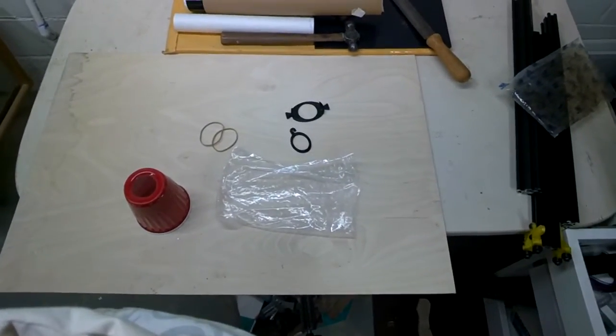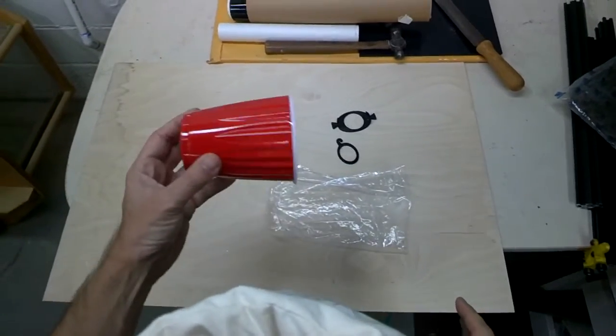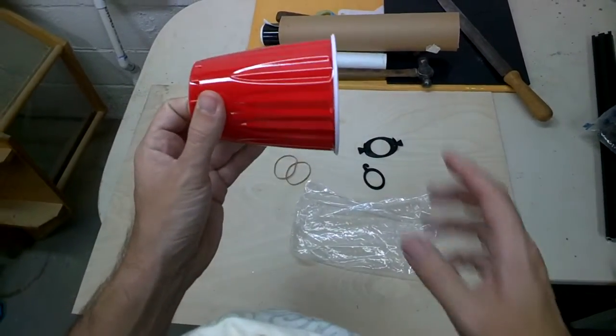Alright, the assembly of the cup cutter 1.0. First, gather your materials. You need a red cup with a hole cut in. These are the Kirkland brand cups.